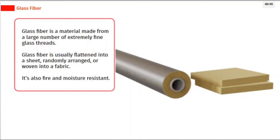Glass fiber is a material made from a large number of extremely fine glass threads. Glass fiber is usually flattened into a sheet, randomly arranged, or woven into a fabric. It's also fire and moisture resistant.